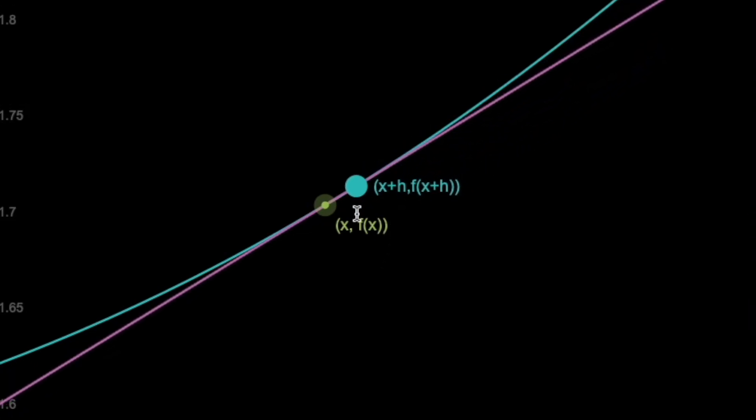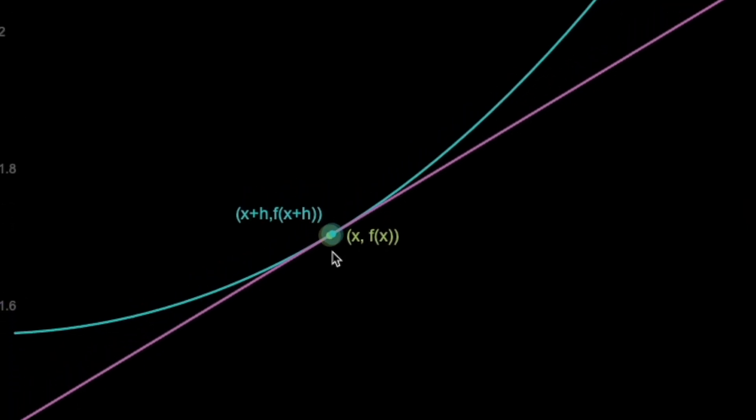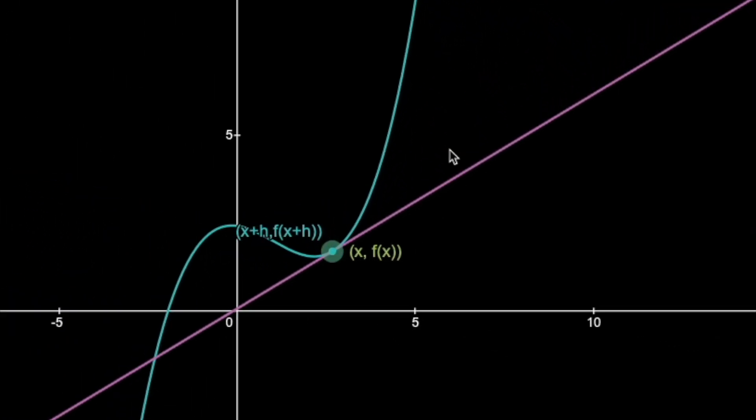These two points are so close together they are basically touching each other, and essentially giving us the instantaneous rate of change of the function at that point x. This is the tangent line, and this is the limit definition of the derivative.